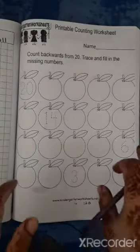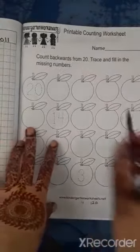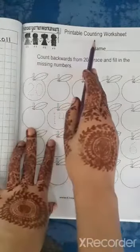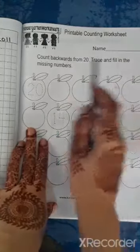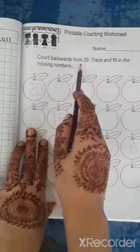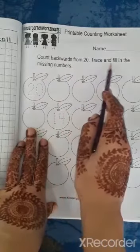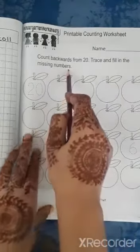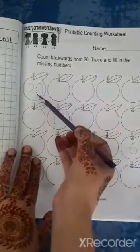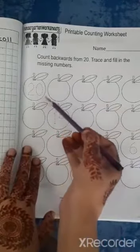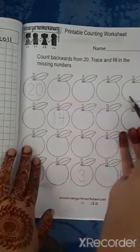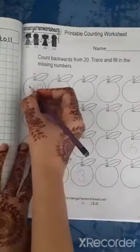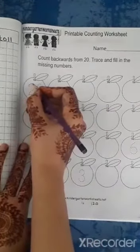Now open page number 120. Printable counting worksheet. Write your name. Count backwards from 20, trace and fill in the missing numbers. You have to trace them, trace them, and then you have to start the backward counting.